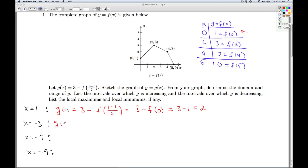g of negative 3. By definition, it's 3 minus f of 1 minus negative 3, all divided by 2. So this is 3 minus f of 1 minus negative 3 is positive 4, 4 divided by 2 is 2. And what's f of 2? Well, sure enough, that's a function value I know. That's 3. And 3 minus 3 is 0.